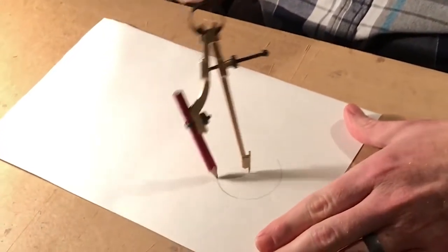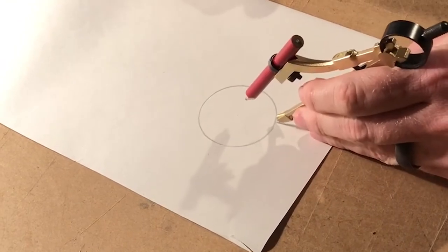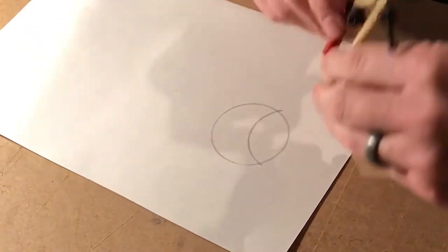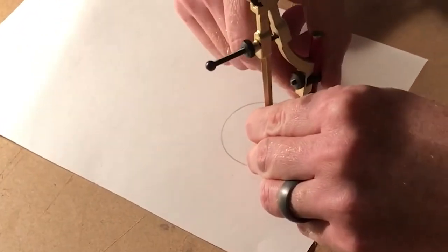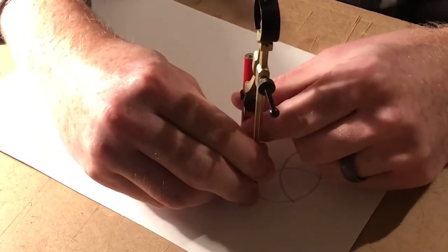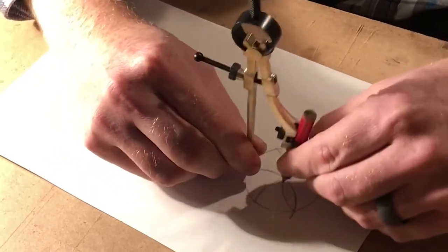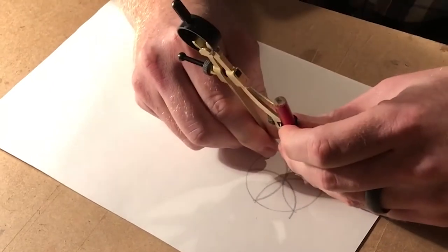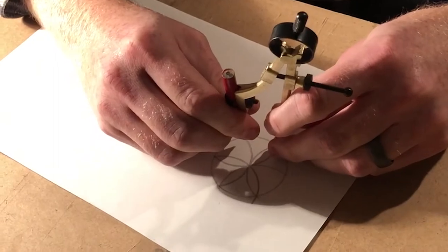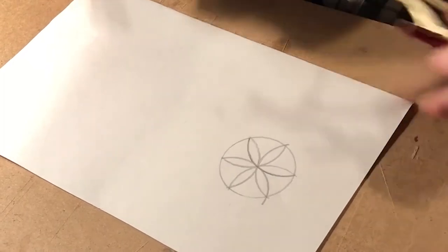What you do is start out, make a circle, and then anywhere on that line put your anchor point. Make an arc, then go to the next one, make an arc, go to the next one.